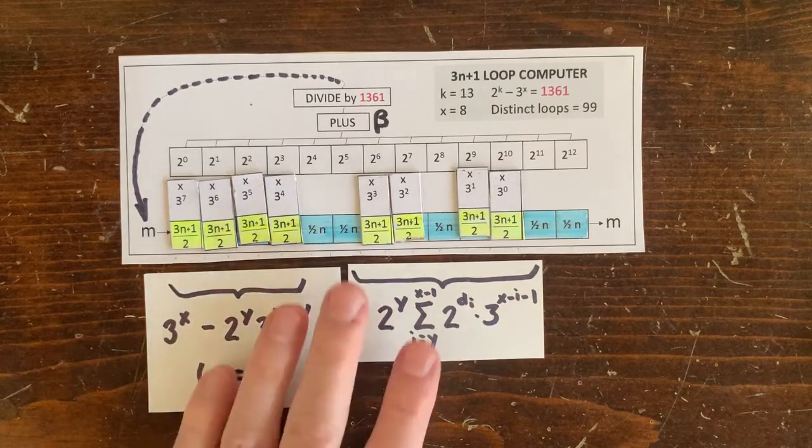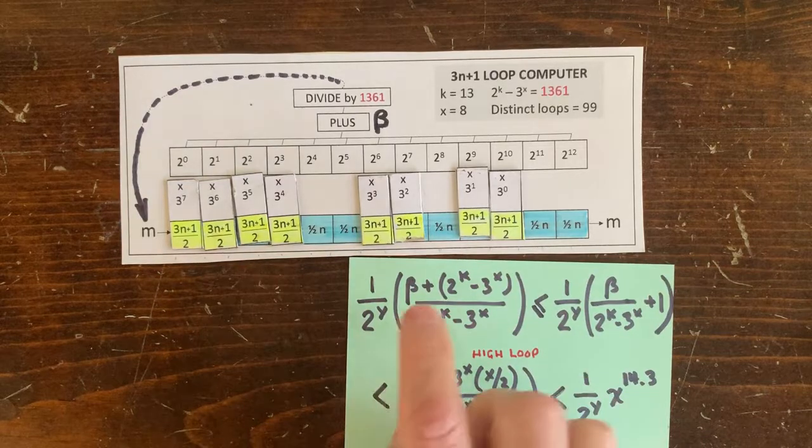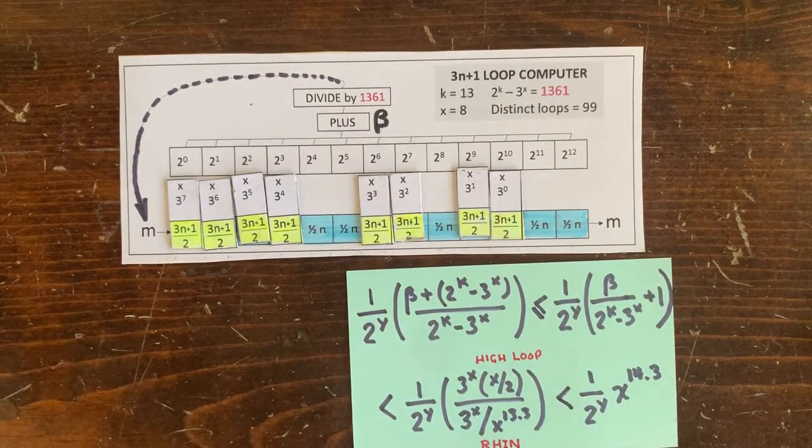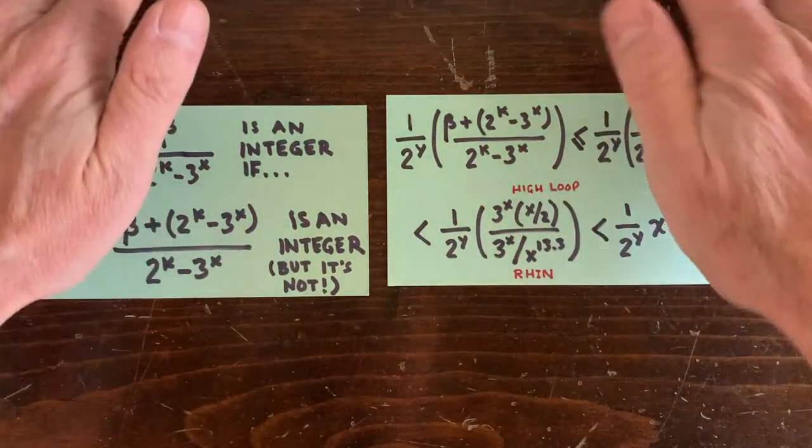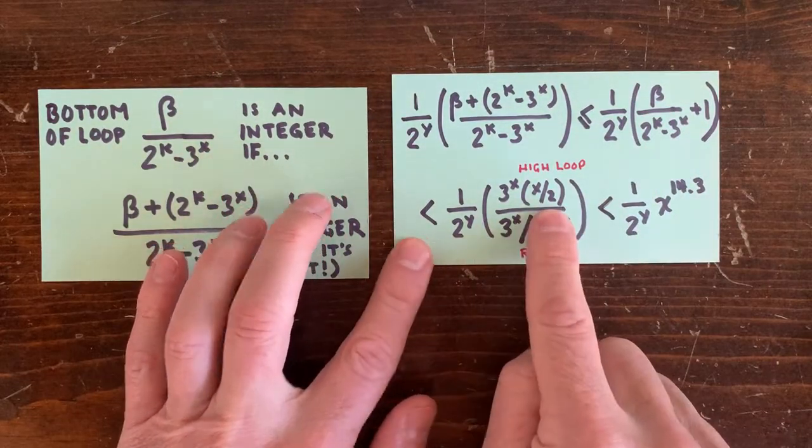Now, what kind of y is big enough to send this ratio under 1? Two things. Beta has to be smaller than 3 to the x, x over 2 by our high loop bound a couple episodes back.